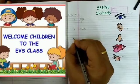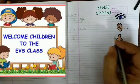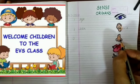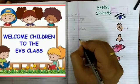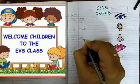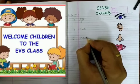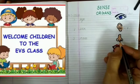Write down number 3. Our third sense organ is nose. We smell with our nose. N-O-S-E, nose.